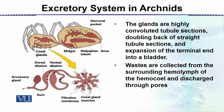The coxal glands are highly convoluted. Here we can see the location in the arachnid — these are the coxal glands, and this is the main structure. The coxal gland is the starting point of the excretory pathway.